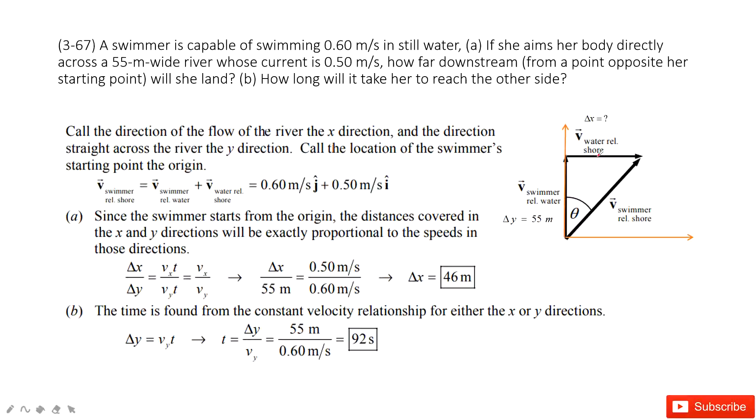In this one, we can see this is the i component and this is the j component. Then we can find the velocity of the swimmer to the shore in two components, i component and j component.